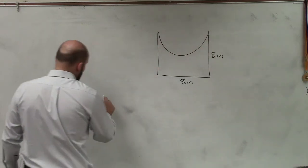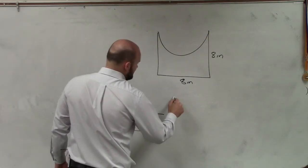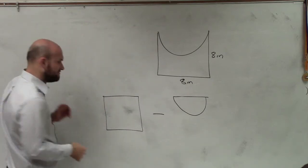So in this case, I'm going to find the area of a square and then subtract the area of a half circle. Now let's write the formulas for each one of these figures.